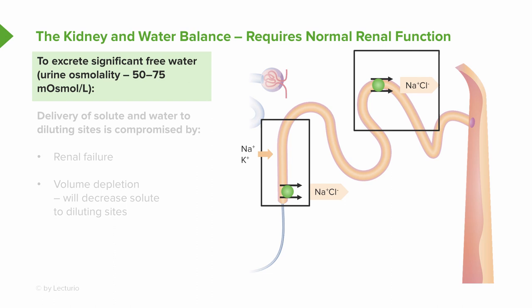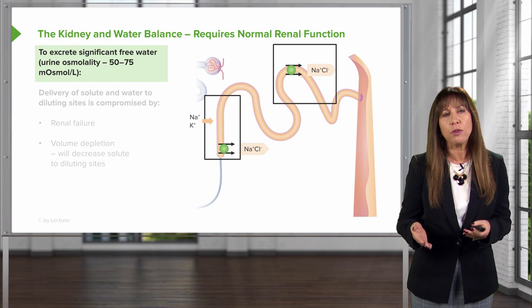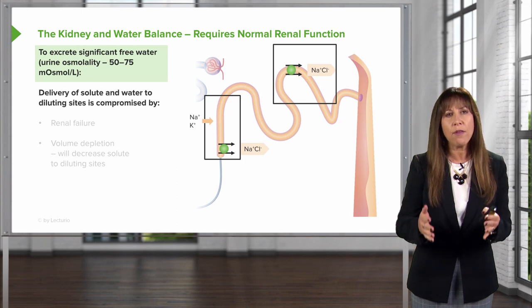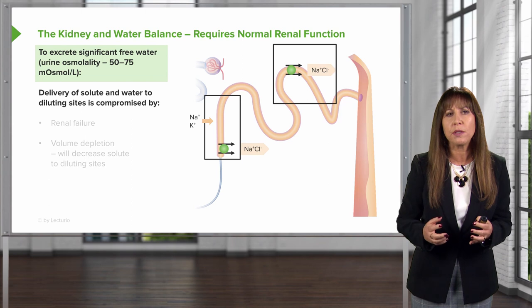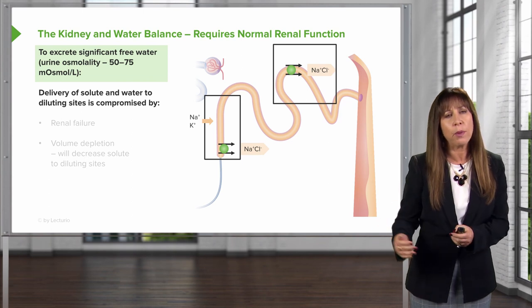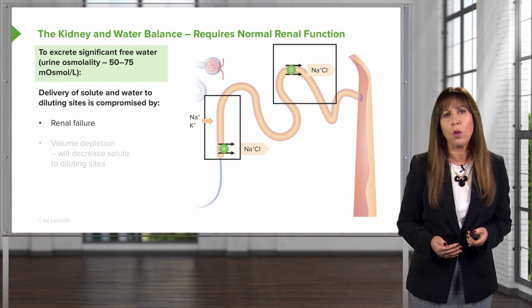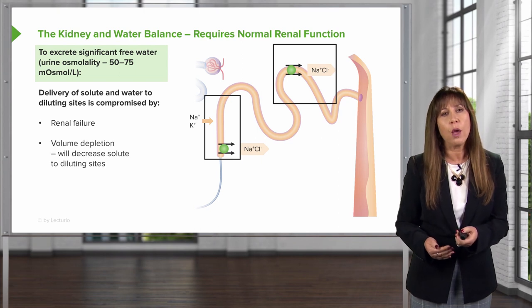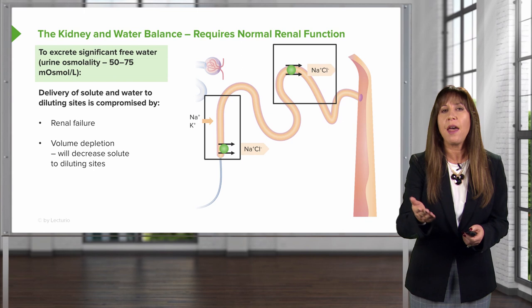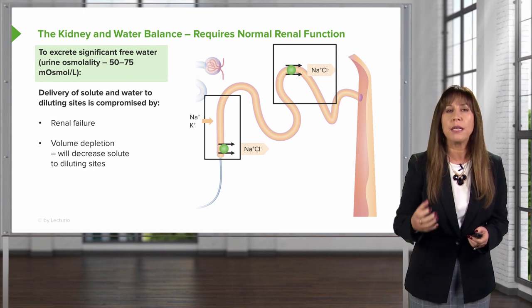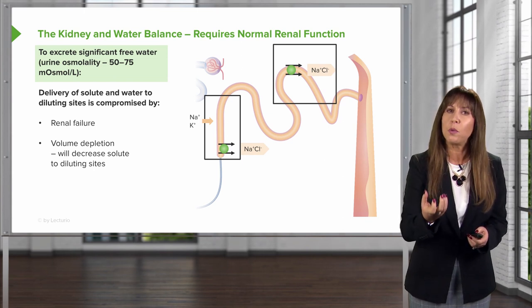What happens when we have an acute water load or need to excrete free water? We can accomplish this by reducing our urine osmolality to as low as 50 to 75 milliosmoles per liter. But it requires normal renal function. First, we have to have delivery of solute and water to those diluting sites. If that's compromised by things like renal failure or volume depletion, where we don't have appropriate solute delivery, that can impact our ability to get urine osmolality down as low as possible.